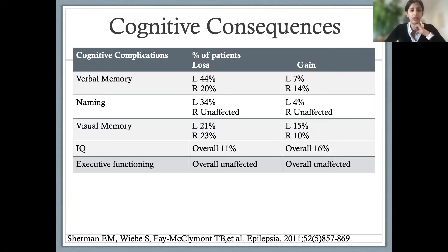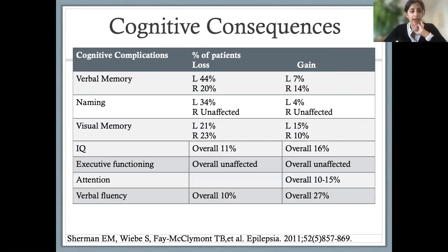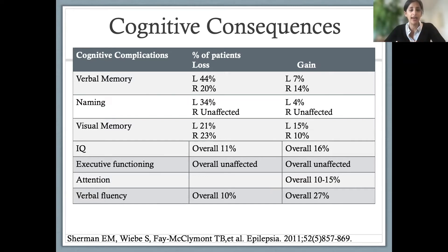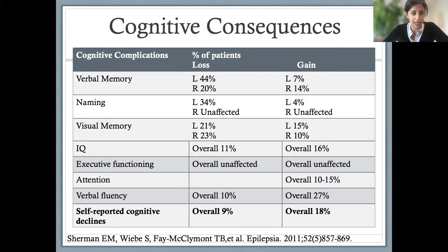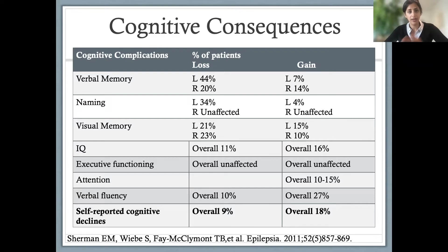We see gains and losses when we look at neuropsychological data before and after surgery. Things like attention and verbal fluency actually tend to improve after temporal lobectomy, ostensibly because we've now controlled the seizures and can often get patients off their anti-epileptic medications over time. Self-reported cognitive declines are rare — only 9% of patients — while cognitive gains are more common, reported in 18% of patients. It's really a balancing act, and it's important to understand the dominance of the hemisphere we're operating on.